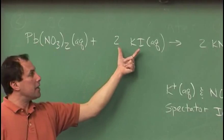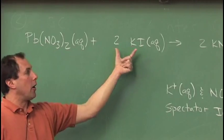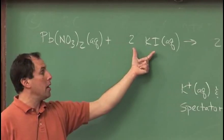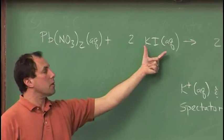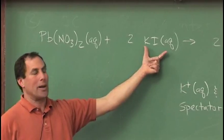The other solution contains potassium iodide, and all potassium salts, because potassium is in group one, are soluble, so this is correctly labeled aqueous solution.